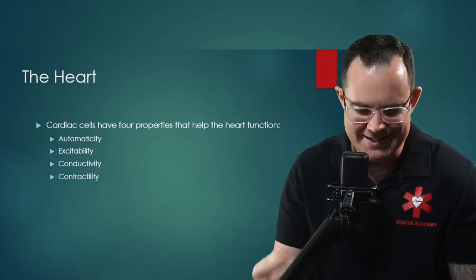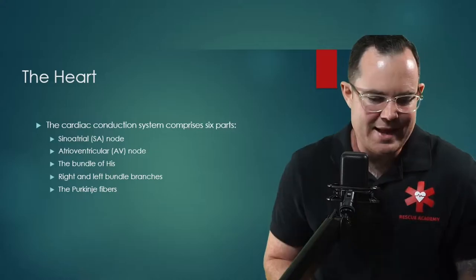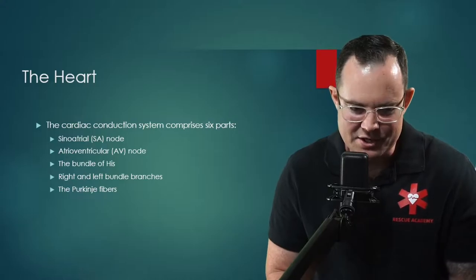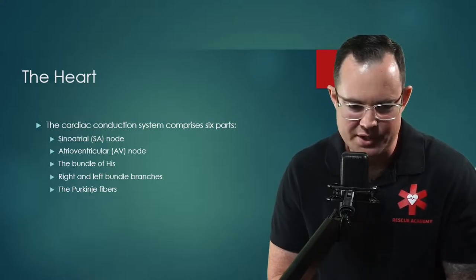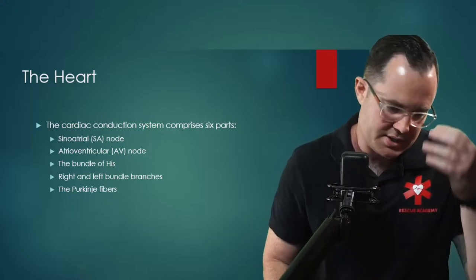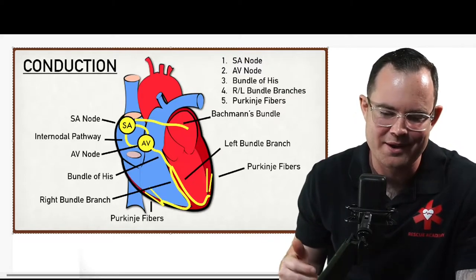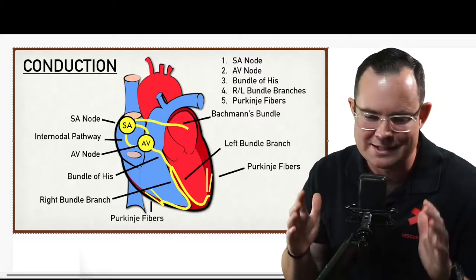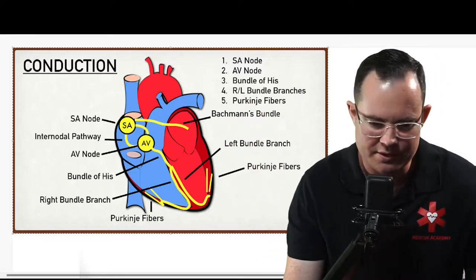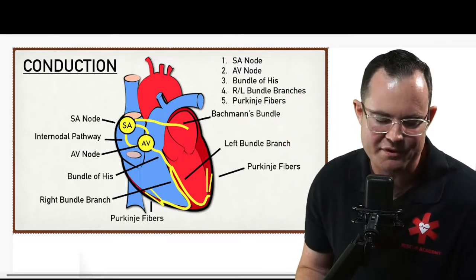The conduction system is based on six parts: the SA node, the atrioventricular node (AV node), the bundle of His, the right and left bundle branches, and the Purkinje fibers. The PowerPoint shows five parts because right and left bundle branches are labeled as one, but it's the same information.